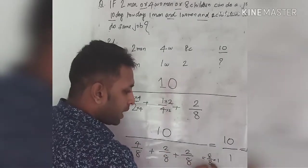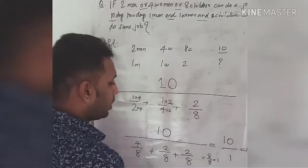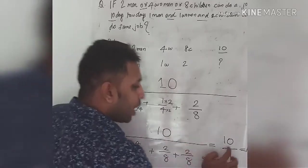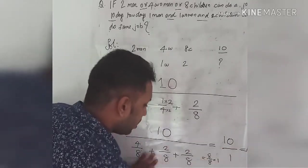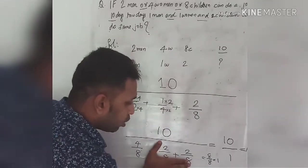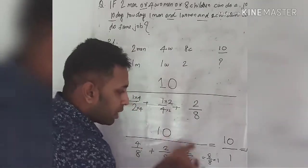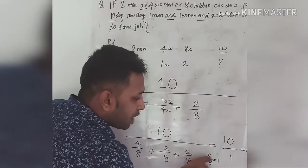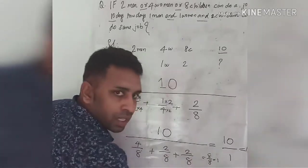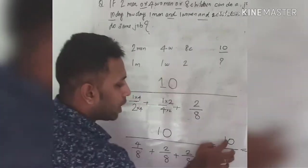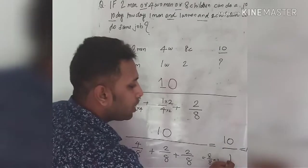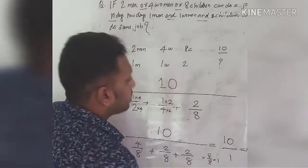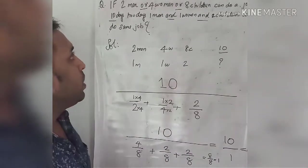4 plus 2 plus 2 is 8, and 8 by 8 is equal to 1. The numerator is 10, so 10 divided by 1 equals 10. The answer is 10 days. Thank you.